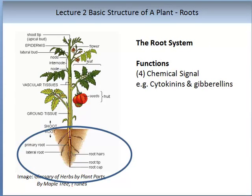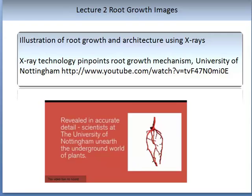The main carbohydrate for food storage is starch. A fourth function that roots can perform is to undertake chemical communication signals. These signals can be a consequence of the detection of an abiotic stress, for example, a limited amount of water in the soil. Common root chemical signals include the cytokinin and gibberellin families. The following link, which can be found on Moodle, is to a video obtained using X-rays to determine an insight into in-situ root development. Please stop the lecture now and watch this video.